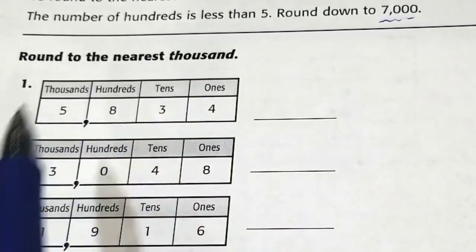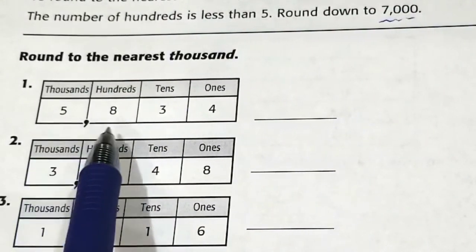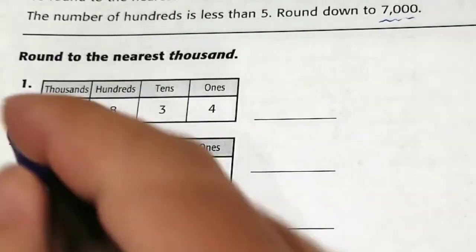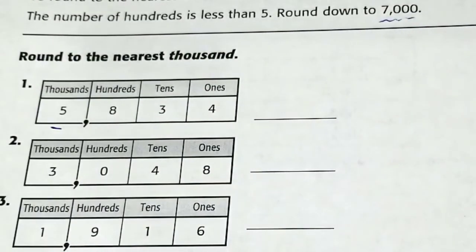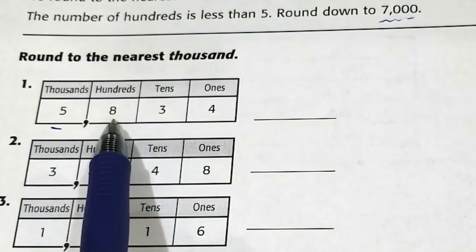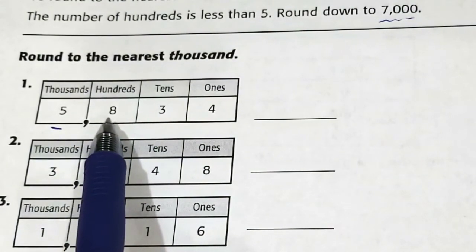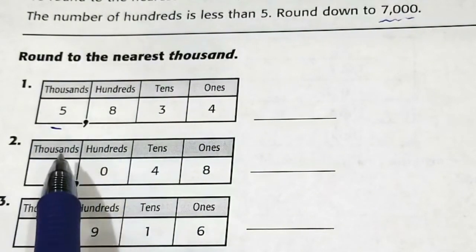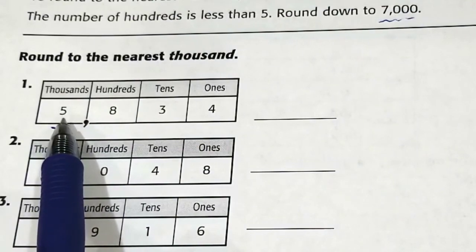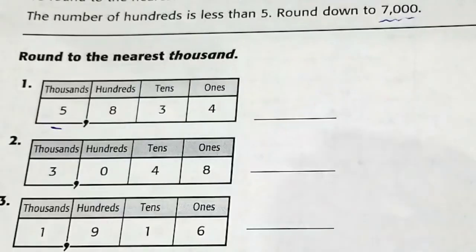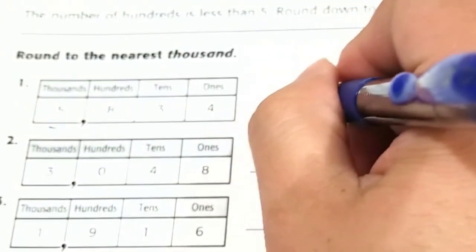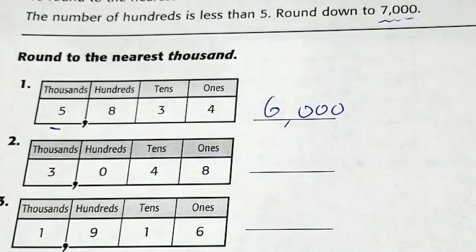Round each to the nearest thousand. So we have 5,834. This is our thousandth place. And we take a look over here. This number is greater than five, so we're going to round this up. When you round up, you add one more to that value and the rest turns into a zero. So 5,834 is closer to 6,000 than it is to 5,000.